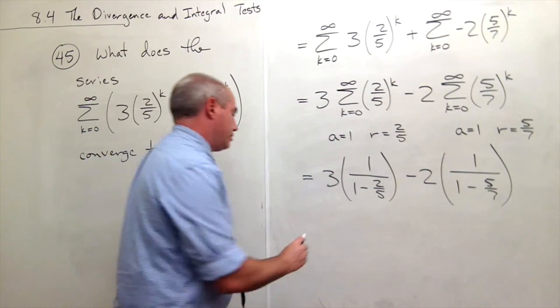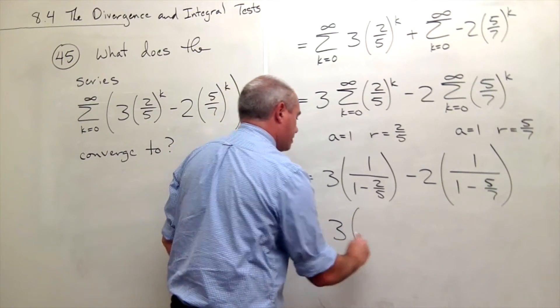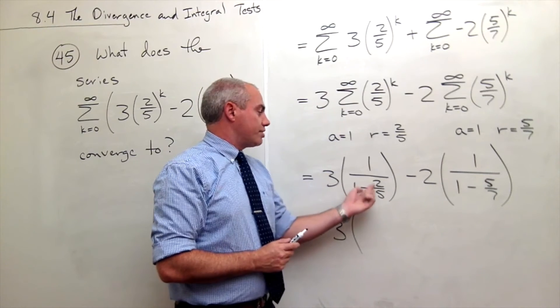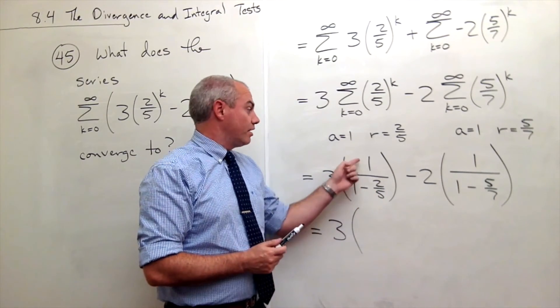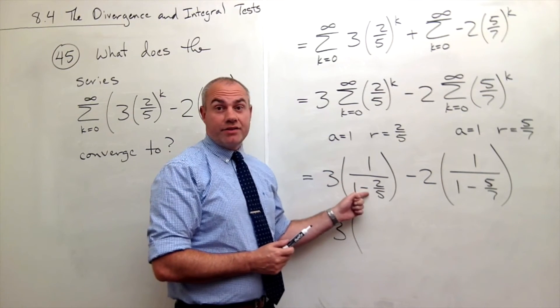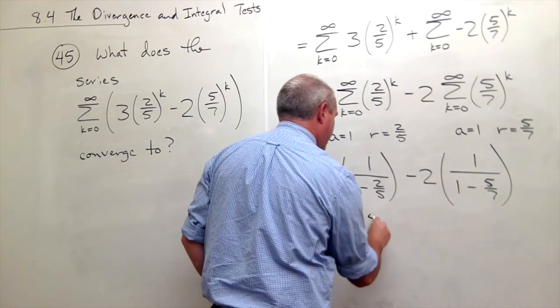So let's put this all together. We get three times—let's see what we got here. This is one minus two-fifths. One minus two-fifths is three-fifths, so I have one over three-fifths. One over three-fifths is the same as five-thirds.